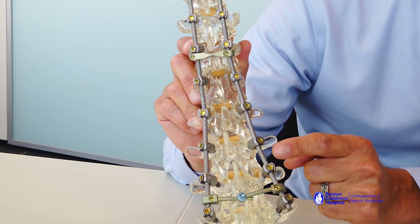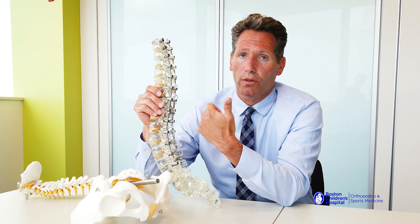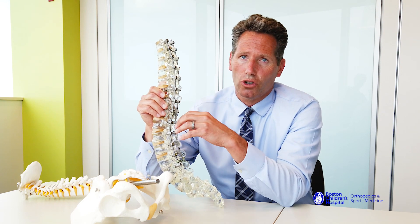Each level of the spine we operate on has specific joints that we use to take those joints out. That helps with both the fusion part of the operation which is making the bones grow together as well as curve correction.